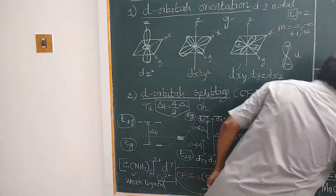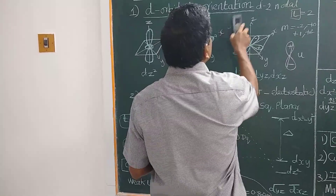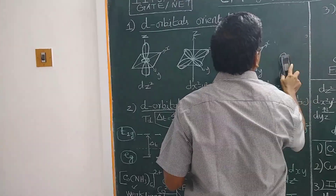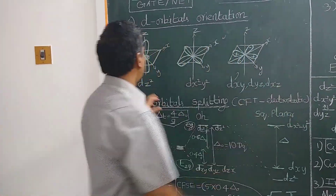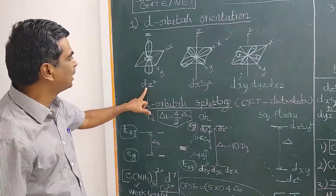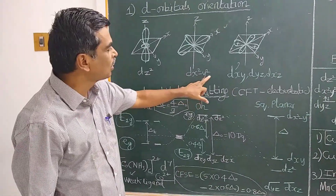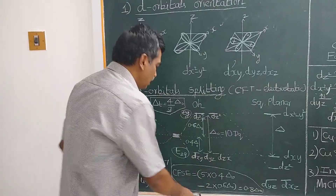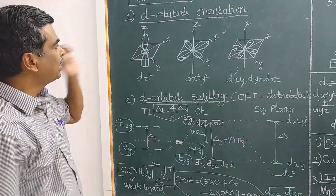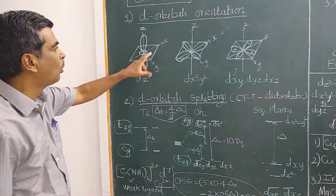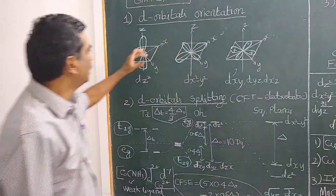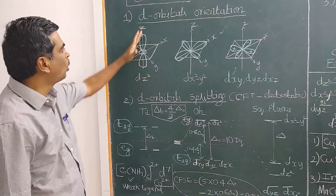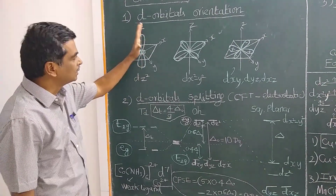There are five D-orbitals: dz², dx²−y², dxy, dyz, and dxz. The lobes of dz² are oriented along the z-axis, and dx²−y² lobes are oriented along the x and y axes. In dxy, the lobes are oriented in between the x and y axes. Similarly, in dyz the lobes are in between the y and z axes, and in dxz they are in between the x and z axes.